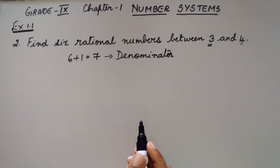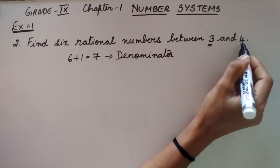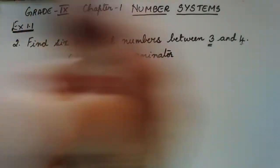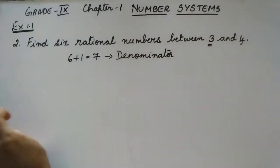Now, let us take the equivalent fractions of 3 and 4 by having the denominator as 7.